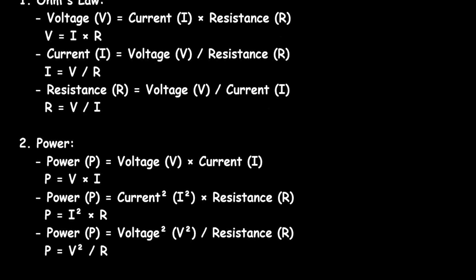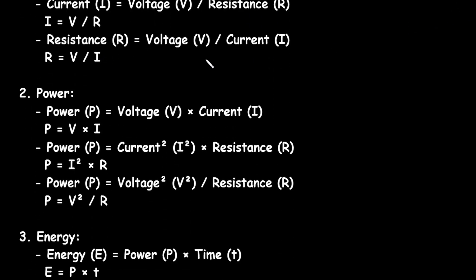Next is power. Power is represented by P. It is equal to voltage into current. P is equal to V into I.